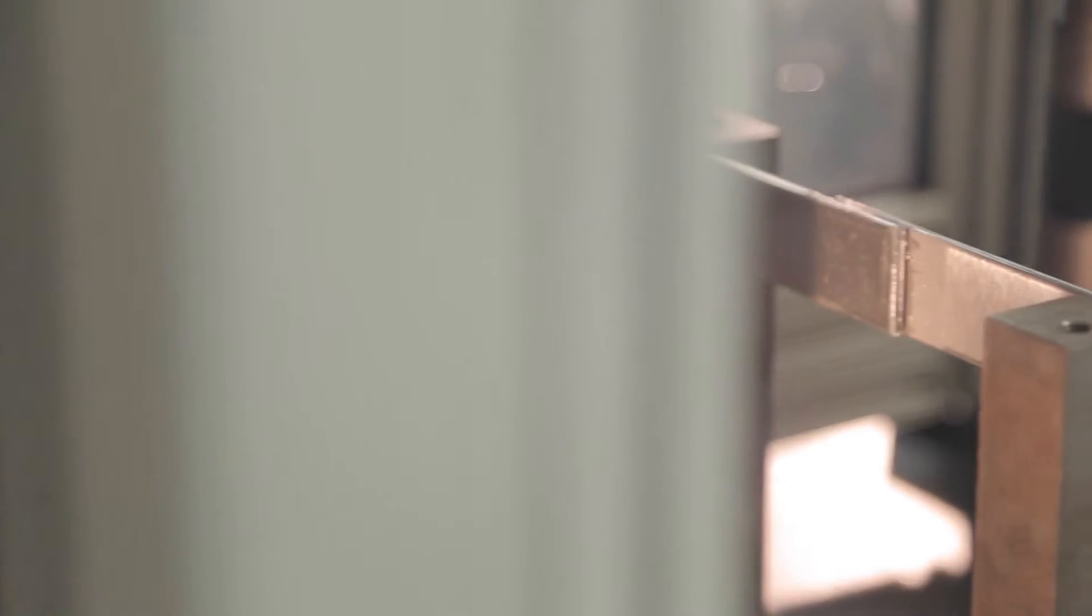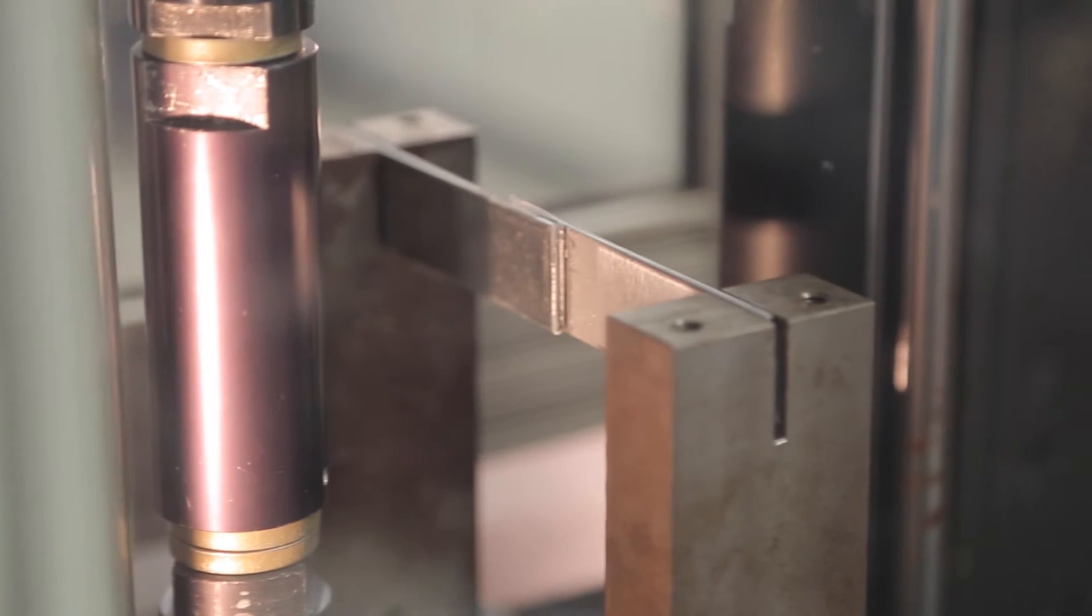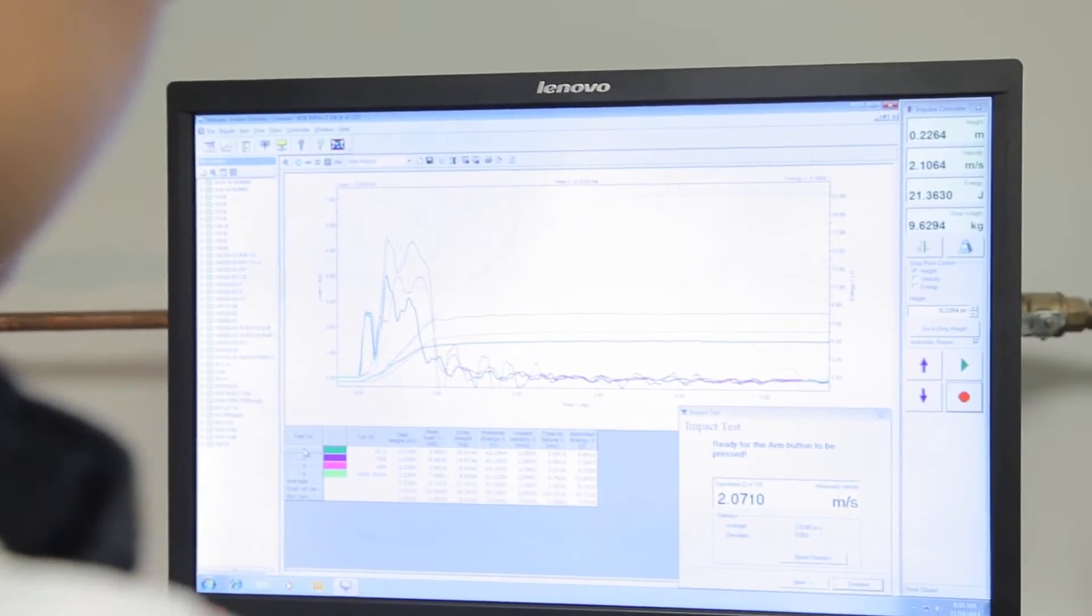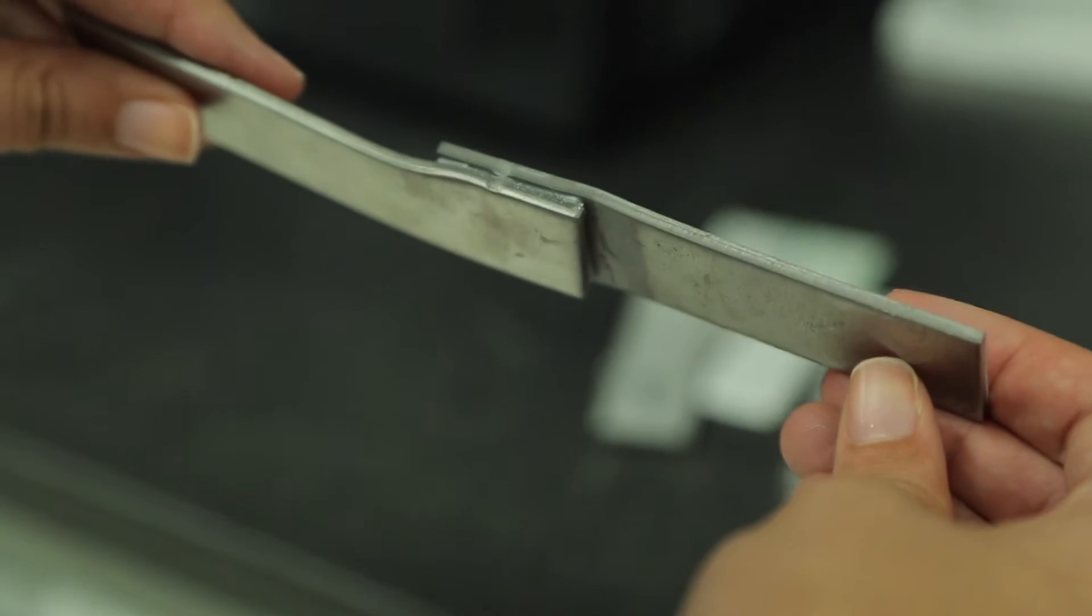One way to test for impact resistance is to drop a weight from a set height onto a bonded assembly and then record the absorbed energy. Did you know that nowadays, adhesives which in the past had low peel and impact strength can be toughened with elastomers, resulting in substantial improvement to these properties?